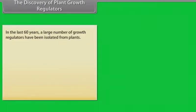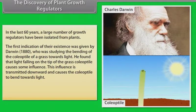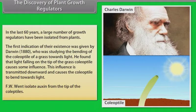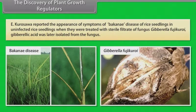The discovery of plant growth regulators. In the last 60 years, a large number of growth regulators have been isolated from plants. The first indication of their existence was given by Darwin in 1880, who was studying the bending of the coleoptile of a grass towards light. He found that the light falling on the tip of the grass coleoptile causes some influence. This influence is transmitted downward and causes the coleoptile to bend towards light. F.W. Went isolated auxin from the tip of the coleoptiles. E. Kurosawa reported the appearance of symptoms of Bakanae disease of rice seedlings in uninfected rice seedlings when they were treated with sterile filtrate of fungus Gibberella fujikuroi. Gibberellic acid was later isolated from the fungus.